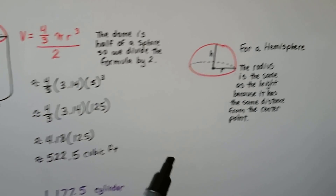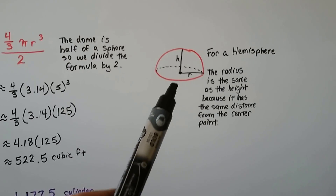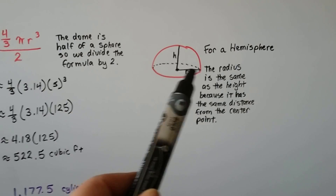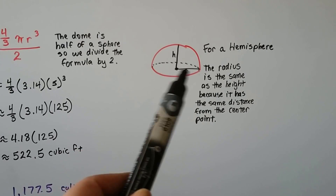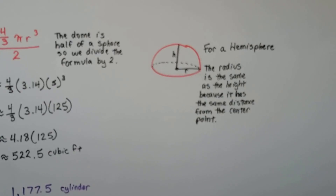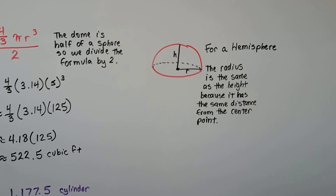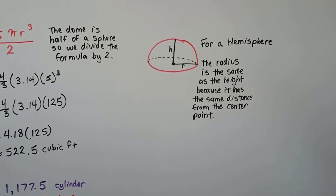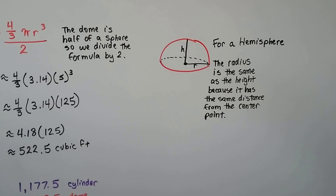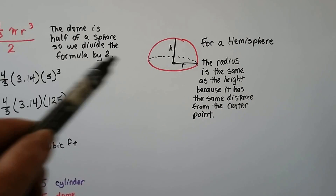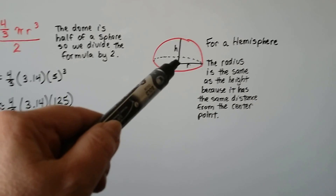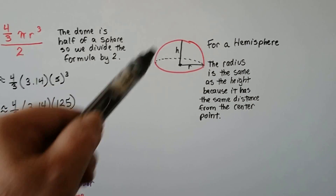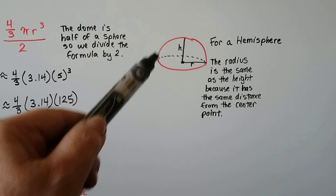When you're dealing with a hemisphere, if it tells you height or radius, it's the same thing — because the height and radius are the same thing. It's the same distance from the center point because it's a dome, a hemisphere.